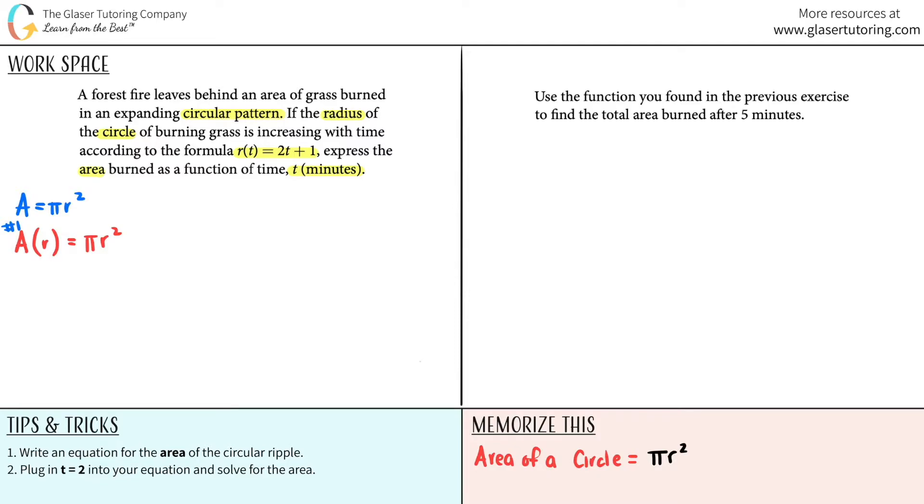Now, the second function they gave you. They're telling you that r(t) = 2t + 1. So my second function is r(t) = 2t + 1. And what's going in here? Here, you're plugging in a time and out comes a radius. T for time, r for radius. So if we talk about it in the same context here, you're plugging in a radius and out comes an area.